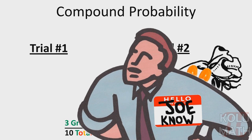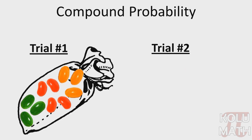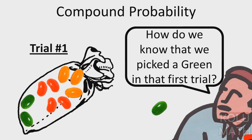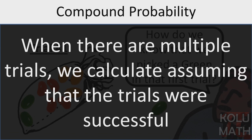Wait, wait, wait. Excuse me, hold up a minute. Do you remember how you said that on the first draw we took out a green bean? Well, how do we know that we picked a green in the first trial? Joe, that's actually a really good question. When we calculate compound probability, we always assume that the trials were successful. Because that's what we're looking for is what would happen if we did it correctly two times in a row. We could calculate the probability of not getting a green, but that's a different problem maybe for a different video. But just remember when you're calculating compound probability, you assume that the trials are successful.